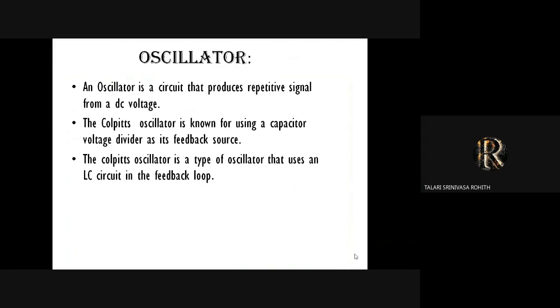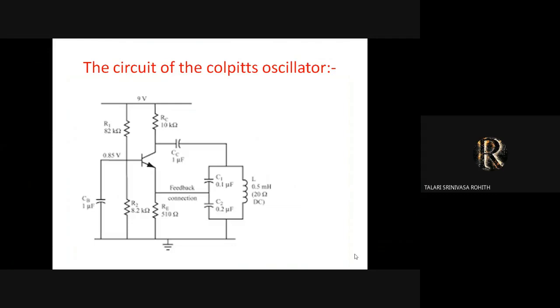The Colpitt's oscillator is a type of oscillator that uses an LC circuit in the feedback loop. The circuit of the Colpitt's oscillator uses a transistor, one inductor, four capacitors, and four resistors.